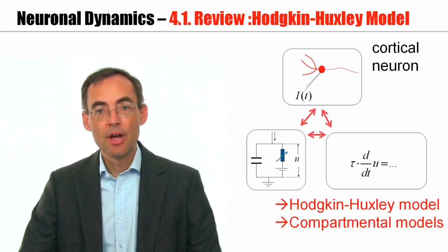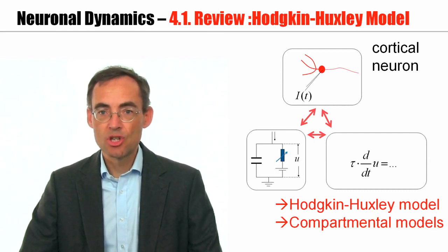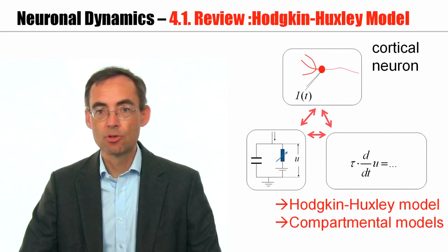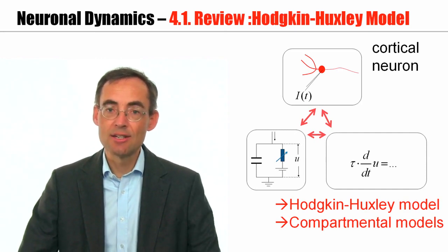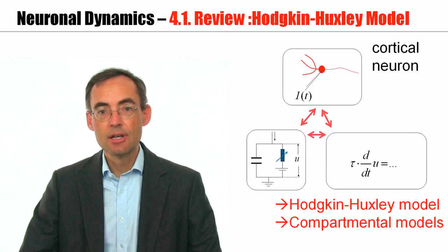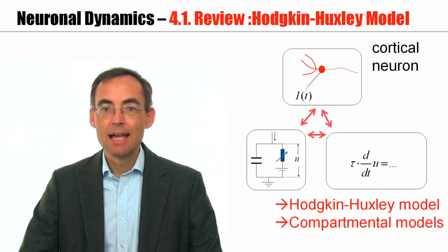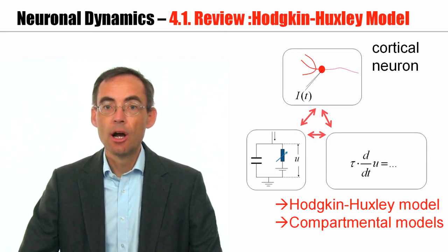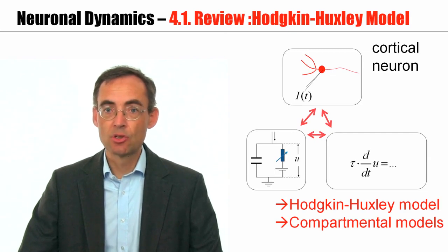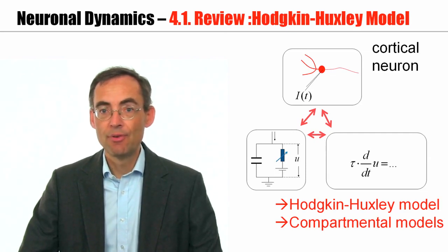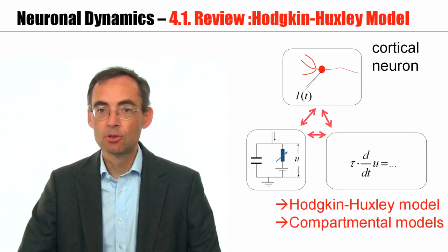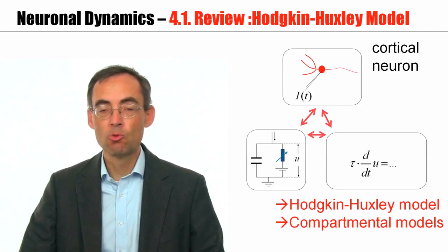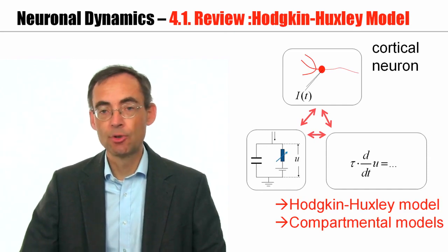However, the aim of a model is to understand what's going on in nature, to describe natural phenomena. If the neuron model itself is so complicated that it becomes hard to understand, then the question arises: what can we do? Is it possible to arrive at a simplified description which is easier to understand, where we can grasp the essence of phenomena, where we can develop mathematical tools to really analyze what's going on? And that's the topic for this week.